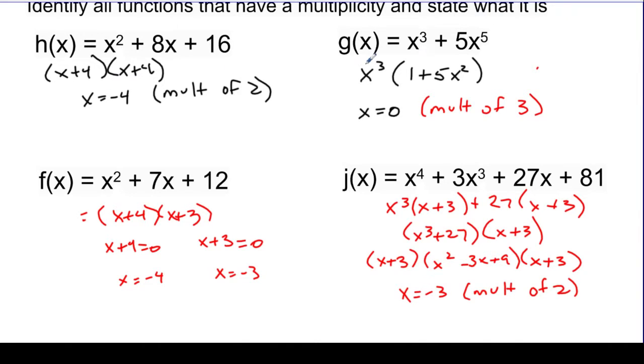In the second problem, only the first factor contributed to the multiplicity of 3. The second one will give us some other 0s, but we didn't solve for those. The third problem, no multiplicities at all. And in our fourth problem, the x plus 3s that we got each contributed towards this multiplicity for x equals negative 3. And then x squared minus 3x plus 9 is going to give us some additional 0s as well that we would have to solve for. So we're just highlighting the 0s that come out of each of these.